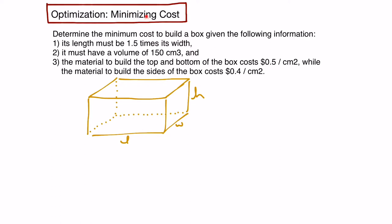Our goal is to minimize cost, so we'll need to build a cost function. Looking at the information given, constraint 3 says that the material to build the top and bottom costs 50 cents per square centimeter, while the material to build the sides costs 40 cents per square centimeter. So cost is related to the surface area of the box. Let's start by building that function.